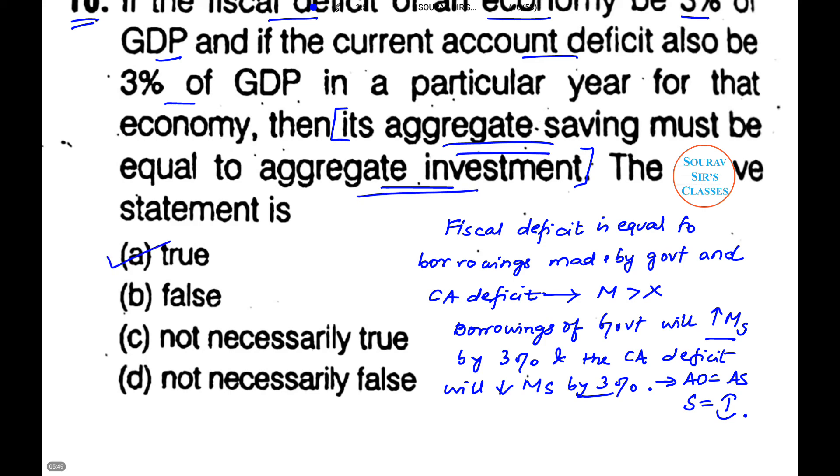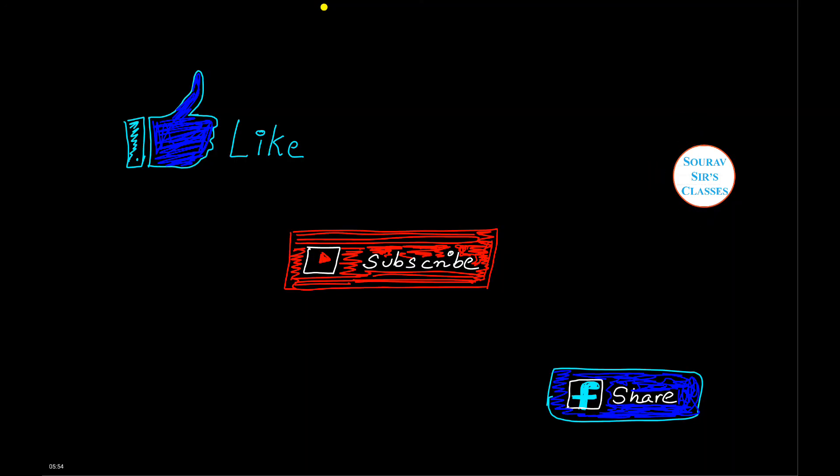So aggregate saving will be equal to aggregate investment. So A will be the correct answer to this particular question. I hope this short tutorial was helpful. If it was, please hit the like button, subscribe to our channel, share our videos, and thank you so much for watching.